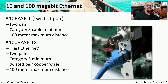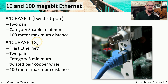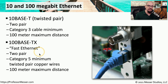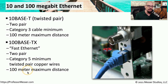We increased Ethernet speeds ten times to create 100 megabit Ethernet, known as 100BASE-TX, sometimes referred to as Fast Ethernet. This also uses two pairs of wires within the cable, requires a minimum of category 5 cable, and supports a maximum distance of 100 meters.